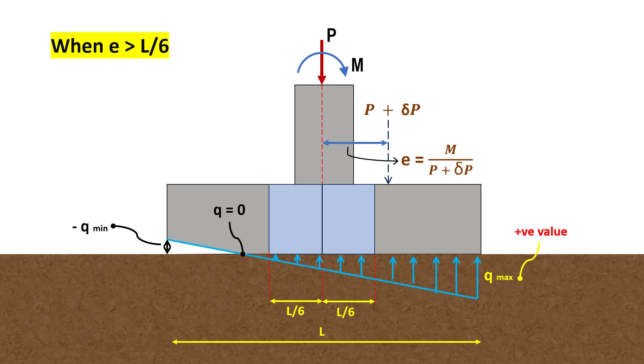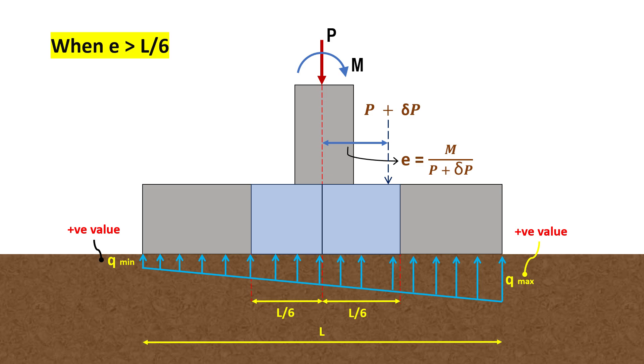However, if E is greater than L by 6, negative soil pressure develops leading to areas of the footing losing contact with the soil. To counter this, the footing area must be increased to bring the eccentricity within the mid third and maintain positive soil pressure, ensuring stability.